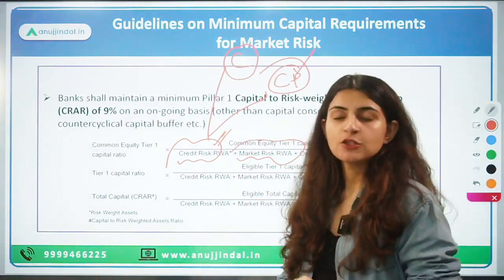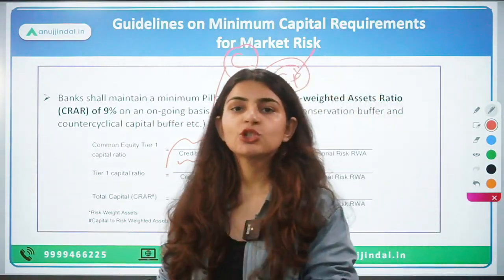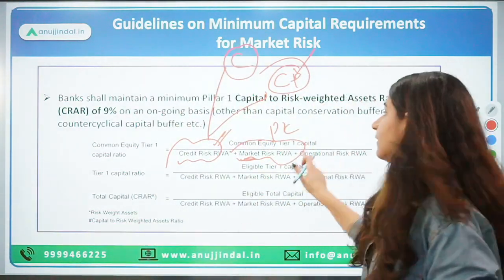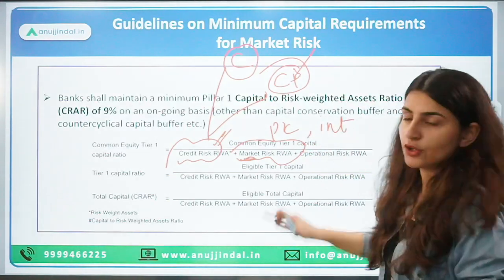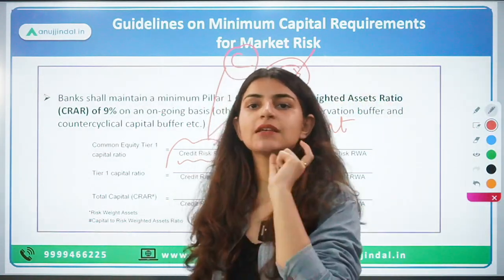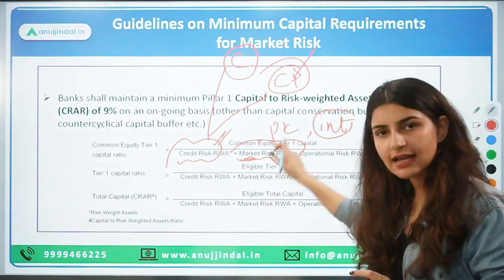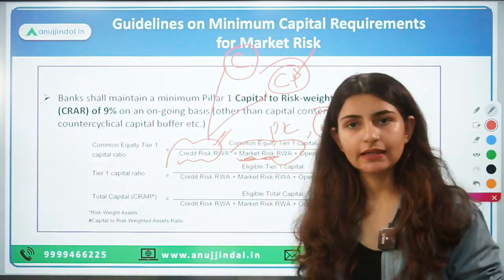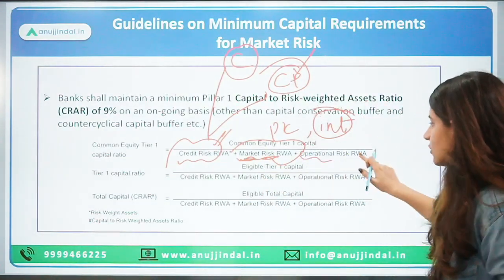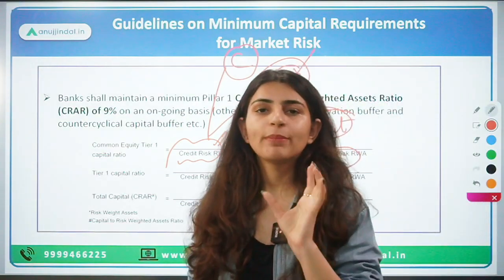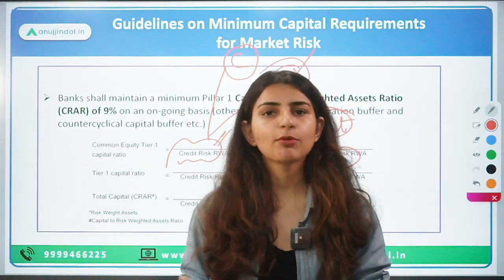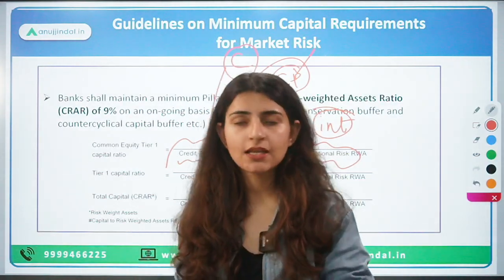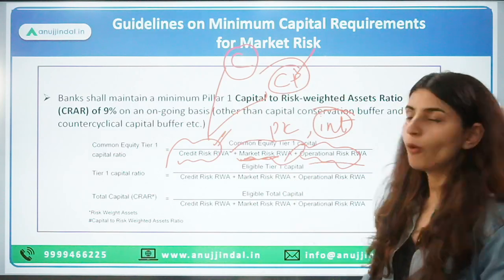Similarly, what is market risk? If there is a fluctuation in prices of instruments, or a fluctuation in interest rates, and it affects the balance sheet of banks, those are included in market risk. The third risk is operational risk — nothing but the internal processes of banking: the day-to-day operations and internal processes of the bank.